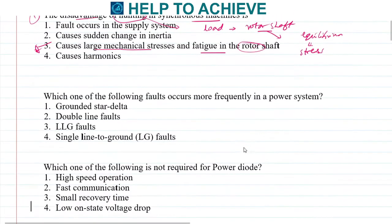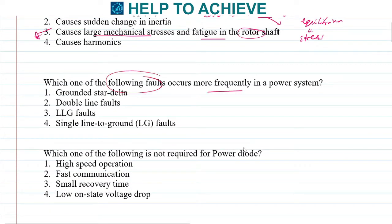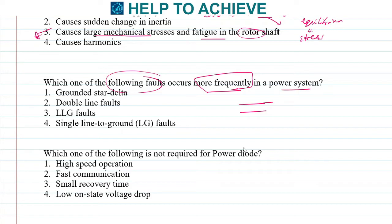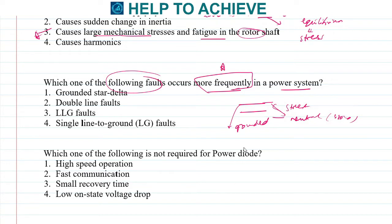Next question: which faults occur most frequently in a power system? In power lines, if one line is grounded or comes in contact with the neutral, a fault occurs. These are the most common faults, caused by high winds or trees falling on power lines. They are known as single line to ground faults, and this is the correct answer.